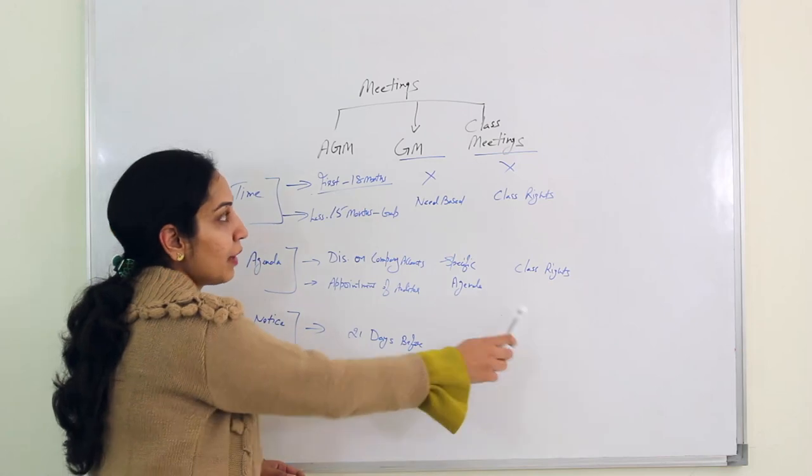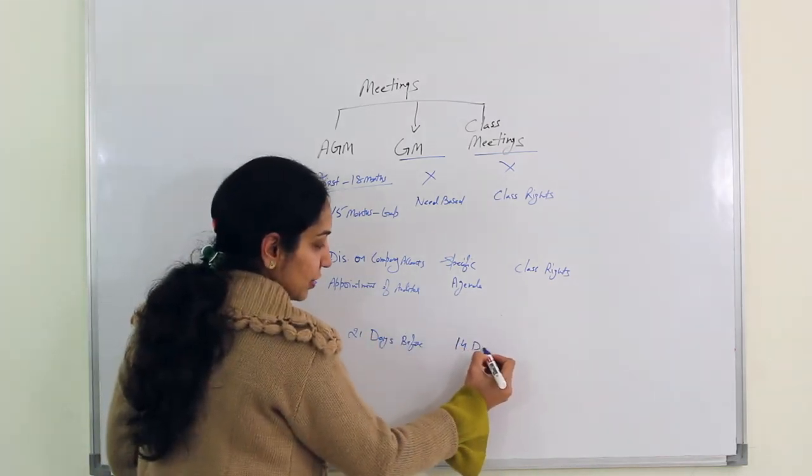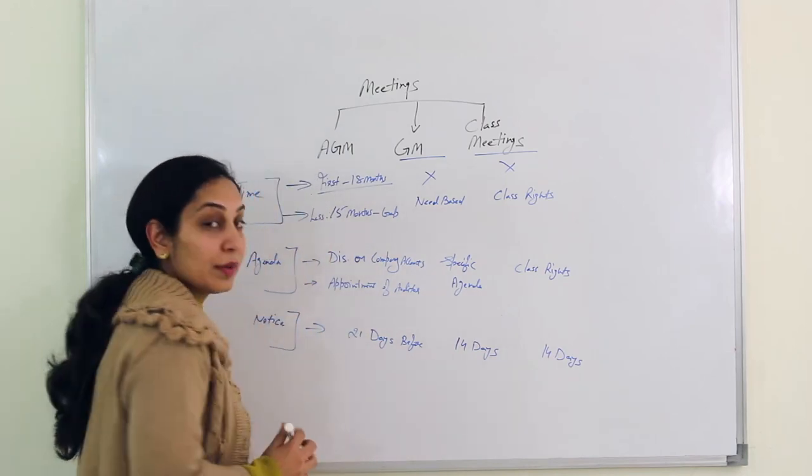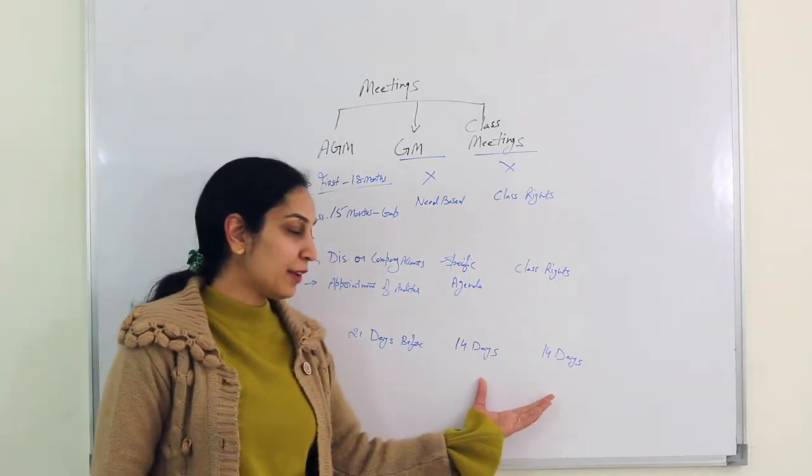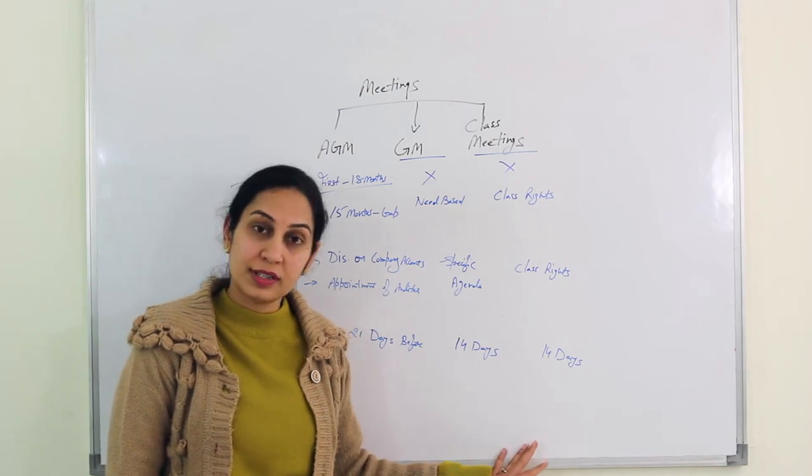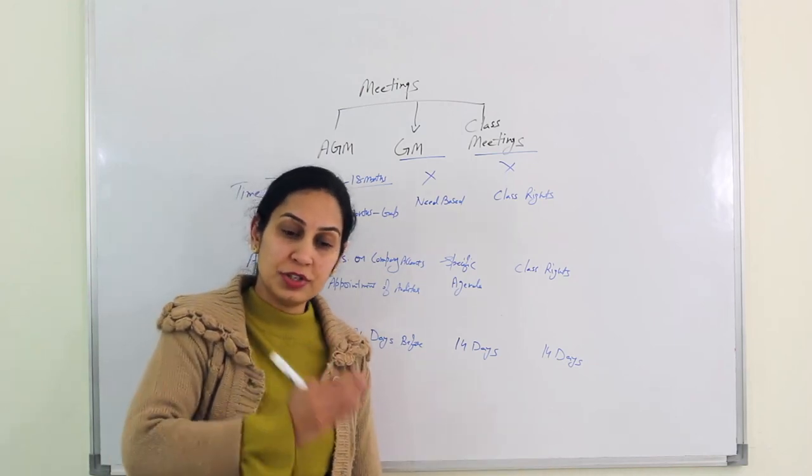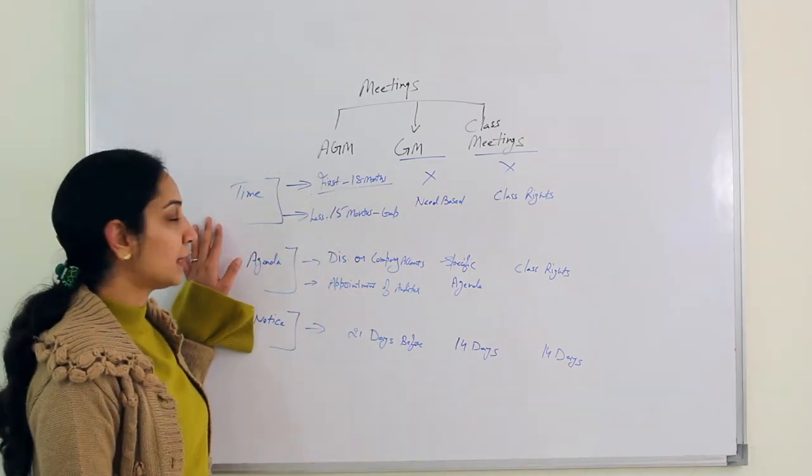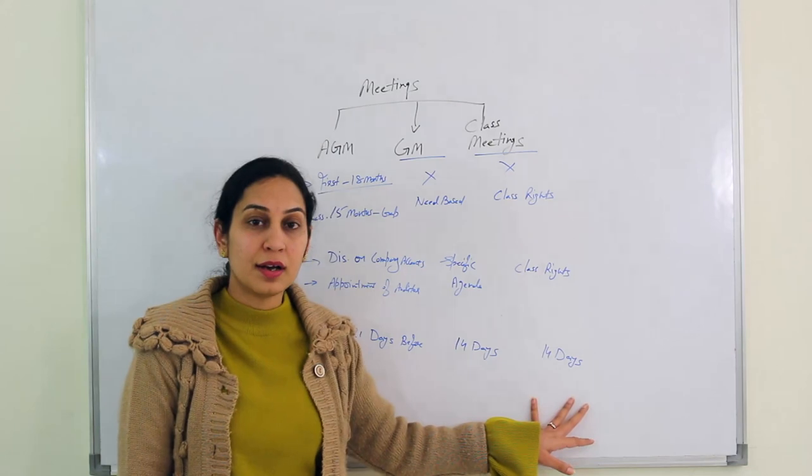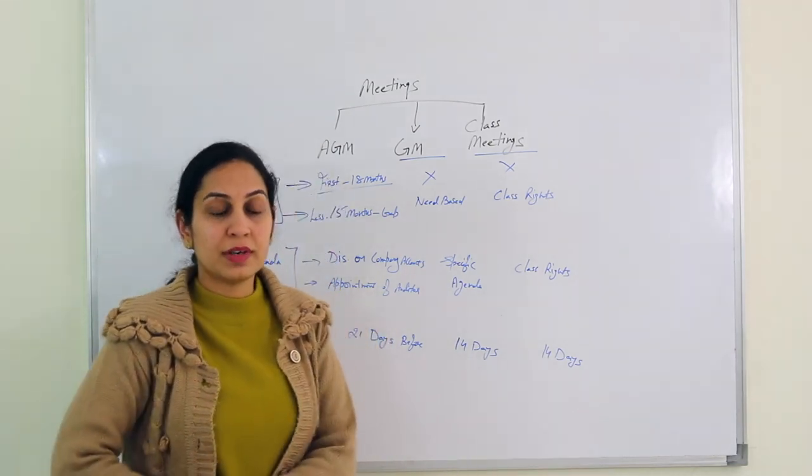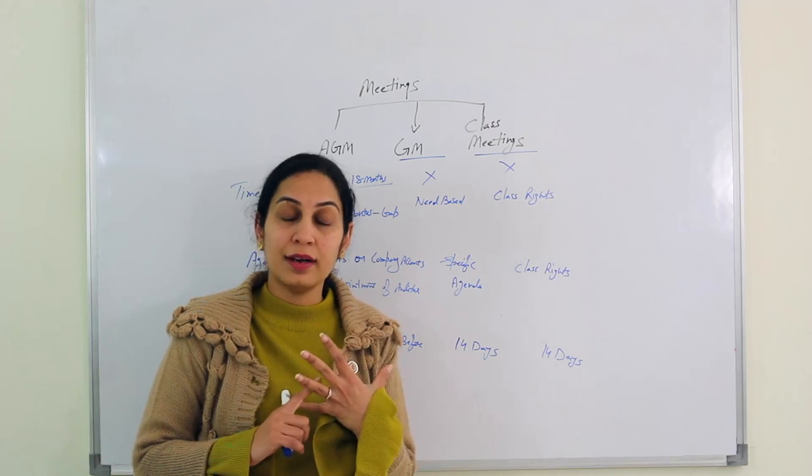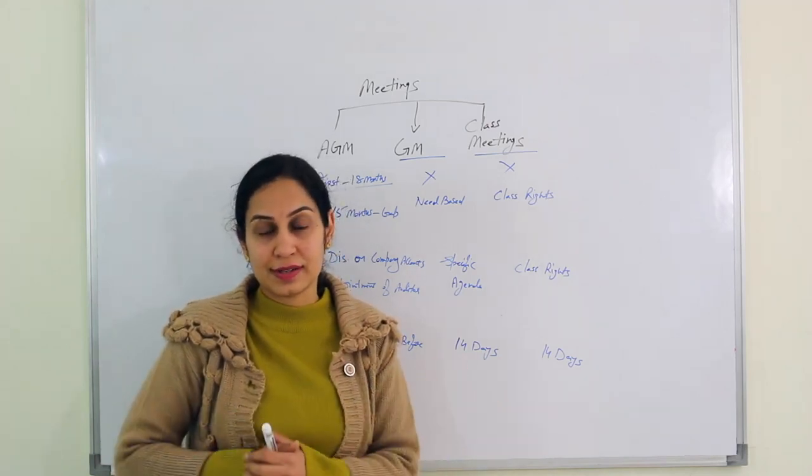In the case of GM and class meeting, the notice is 14 days, not 21 days. In class meeting also it has to be 14 days and not 21 days. Again the same clause. If 95% of the shareholder here and here decides that less than 14 days notice is fine, then less than 14 days notice will be given. So this is how AGM and GM and class meetings happen. We talked about the timings of it, we talked about agenda needs to be discussed, and finally we decide as to how many days of notices are required for all three meetings. So I am sure by now we have understood the concept of meetings. We understood there are three types of meeting: AGM, GM and class meeting. And all three meetings have their own set agendas and the notices.